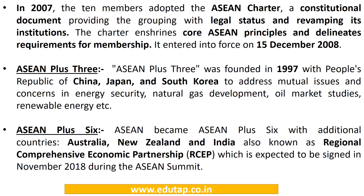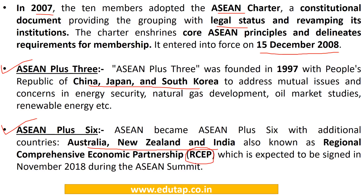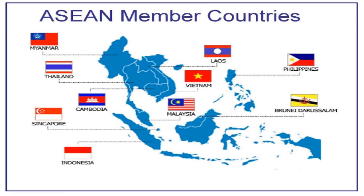To give the group legal status, all 10 members signed the ASEAN Charter in 2007, which entered into force on 15th December 2008. Another important point is the composition of ASEAN Plus 3 and ASEAN Plus 6. ASEAN Plus 6 is also known as the Regional Comprehensive Economic Partnership (RCEP), which was proposed to be signed at the ASEAN Summit in November 2018. This slide shows all 10 member countries of ASEAN, which are easy to remember by their geographical location.